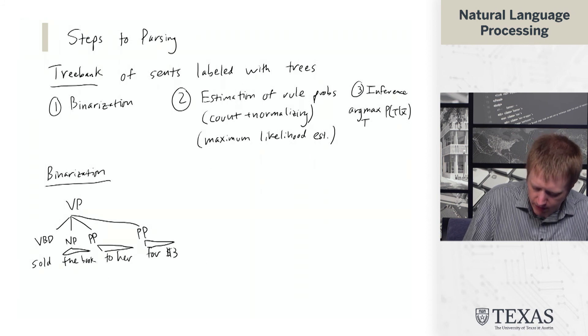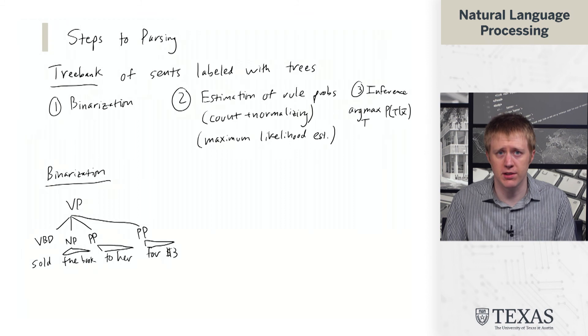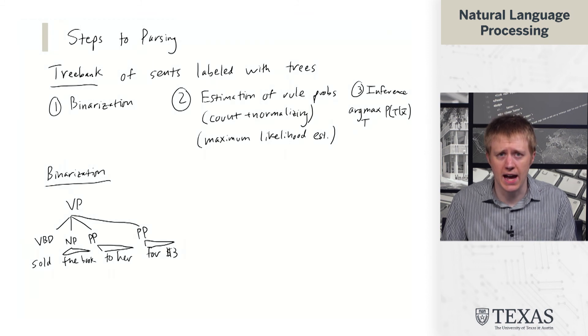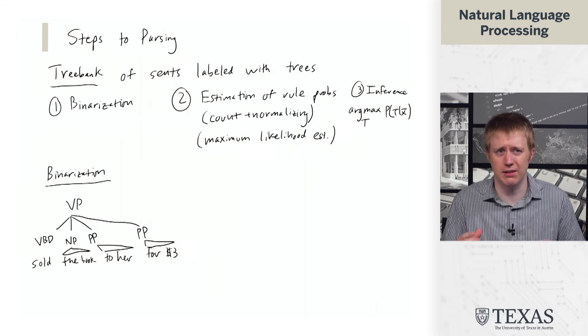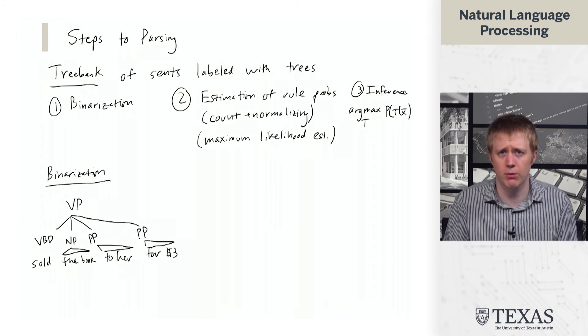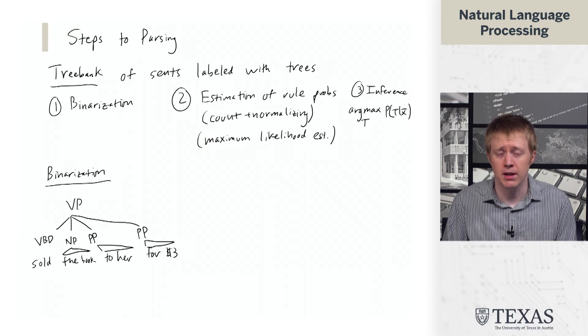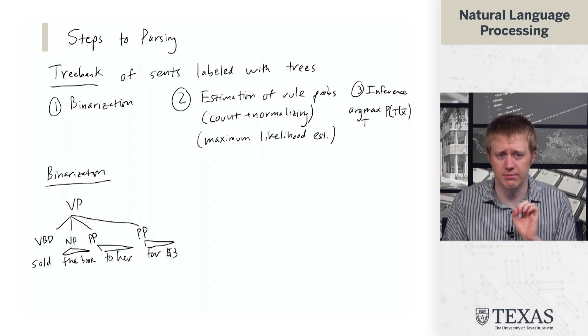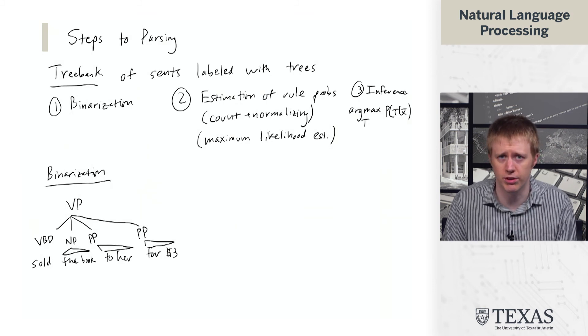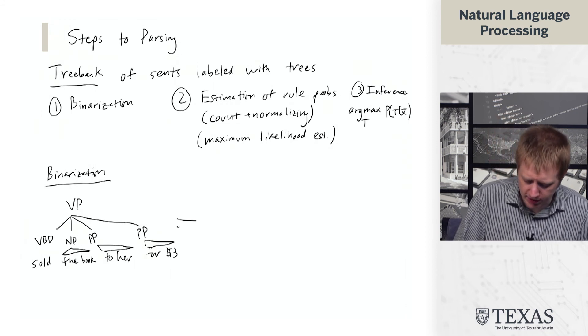For example, we can have fairly high arity productions like 'sold the book to her for $3.' This is a verb phrase. But we don't want these four-way branching rules. When we try to do estimation, it makes rule probabilities more fragile because we have all these really big involved rules that don't work so well. And when we do inference, these cause a computational blow-up. Our inference scales with an exponent corresponding to the highest arity rule in your grammar.